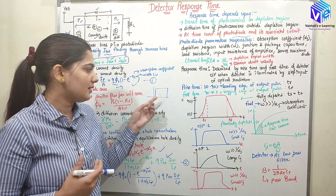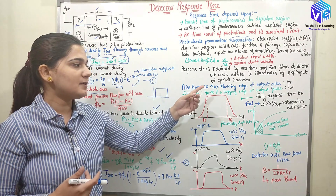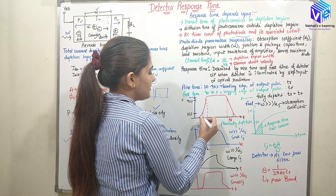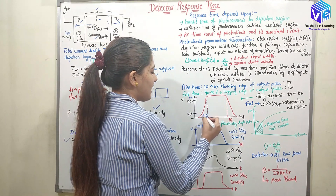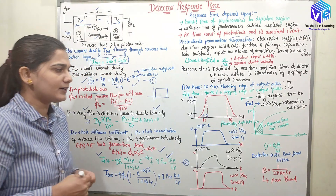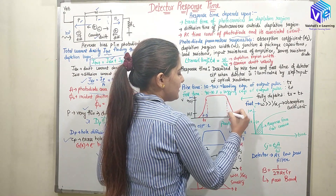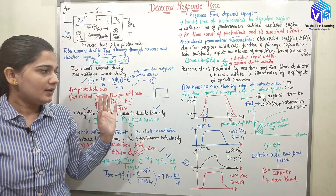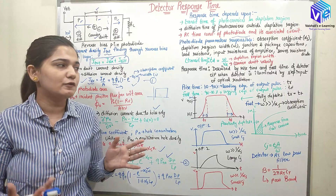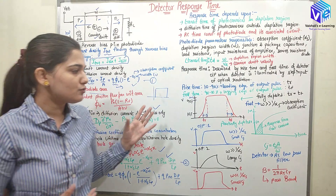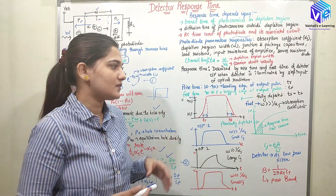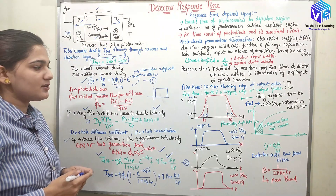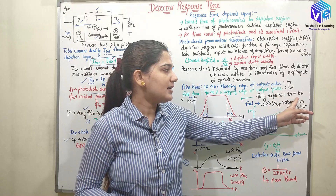Rise time is the time taken by the output to rise from 10% to 90% of its output value. Fall time is the time taken by the output to fall from 90% to 10% of its value. With the help of both of them, I can specify the output of a photodetector. For the fully depleted I region, the full I region is converted into the depletion region and we have equal rise time and fall time: TR = TF.